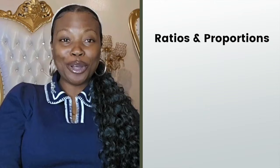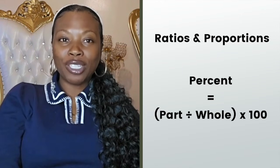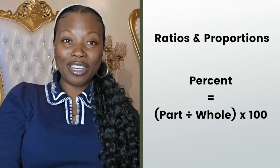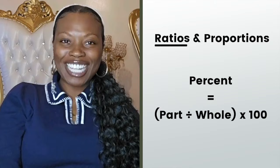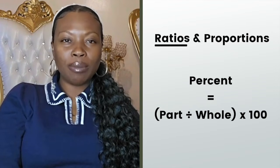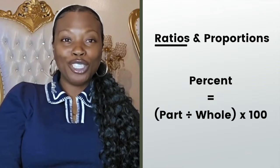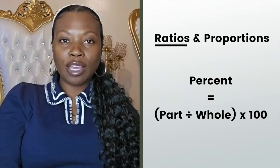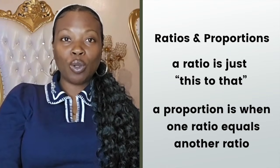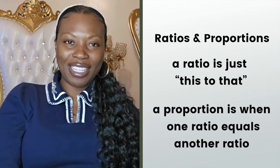Pro tip: always remember that percent means out of 100. If you start there, the steps make way more sense and are easier to remember. Now let's talk about ratios and proportions. Remember how we just talked about percentages? We said percent is the part divided by the whole, then multiplied by 100. Well, that part over whole thing is actually a ratio. The difference is with percents we always turn it into something out of 100. With ratios and proportions, we don't have to do that — we're just comparing two things and scaling that comparison up or down.